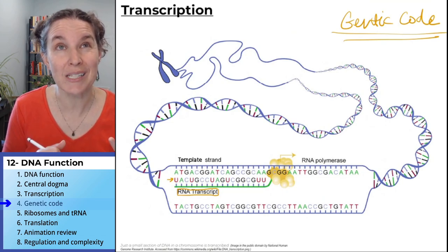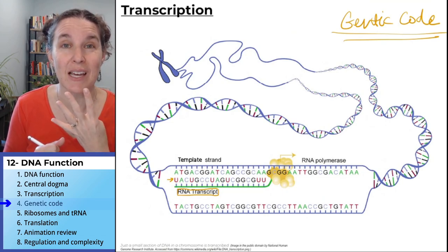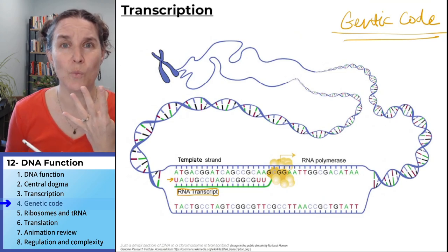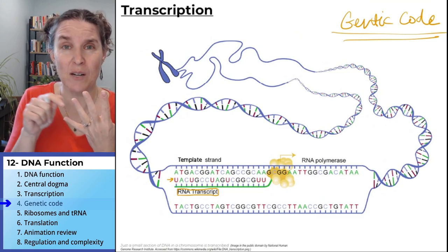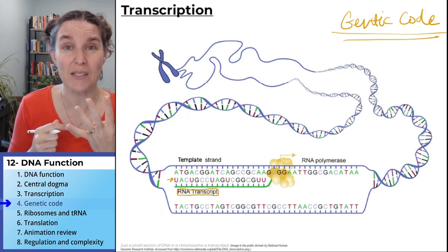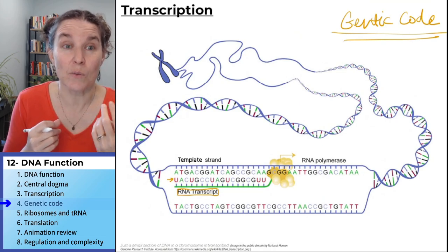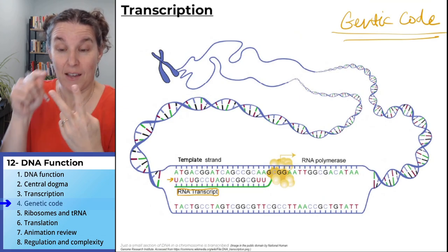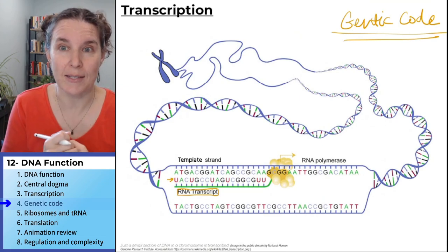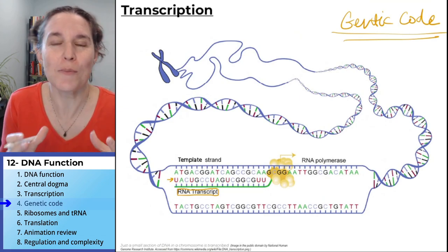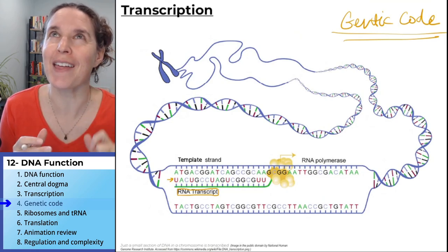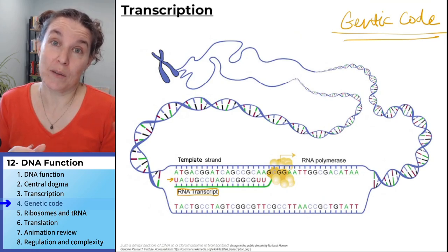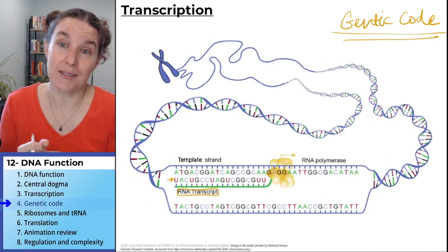Because they reasoned: there's four bases. If each base corresponded with an amino acid, we'd only have four amino acids. What if we had two bases code for one amino acid? You can do the math — that would give you 16 possible amino acids. It's not enough.